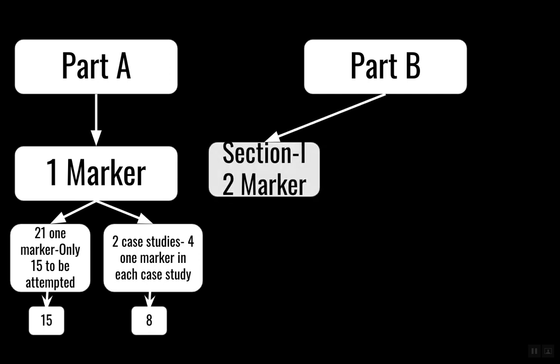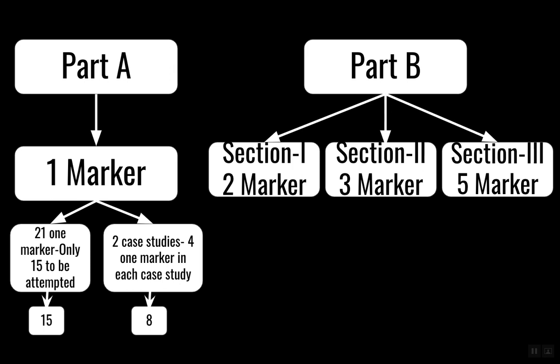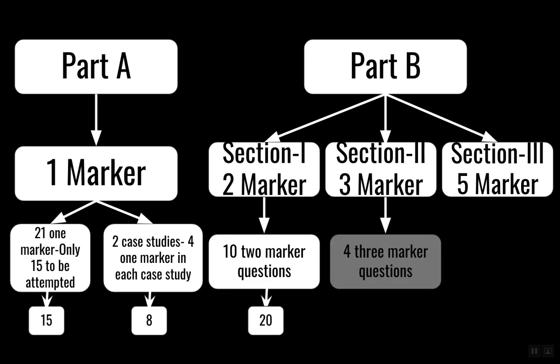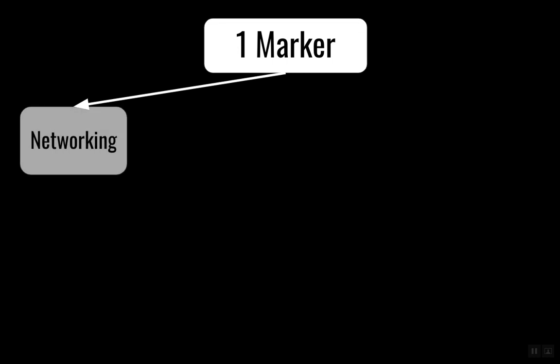When we talk about Part B, we have three sections. The first section will have two-marker questions, the second section will have three-marker questions, and the third section will have five-marker questions, which basically consists of case studies — two ten-marker questions making up 20, four three-marker questions making up 12, and three five-marker questions making up 15. That's how the total comes up to 70, with choices nicely given throughout. The paper is moderate, not very difficult.